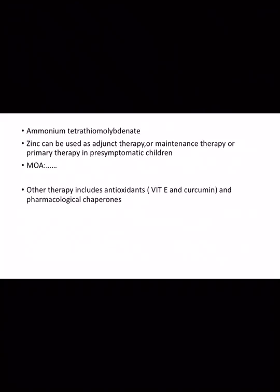Ammonium tetrathiomolybdate is used as adjunct therapy, maintenance therapy, or primary therapy in pre-symptomatic children. Its mechanism of action is that it impairs copper absorption from the gut. Other therapies include antioxidants in the form of vitamin E and curcumin, and pharmacological chaperones — both of which are in research.